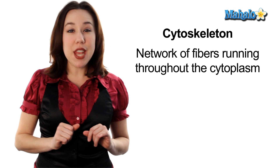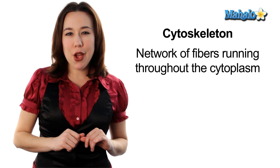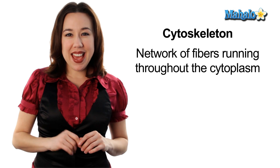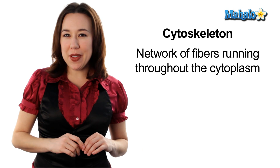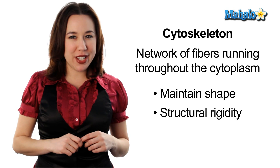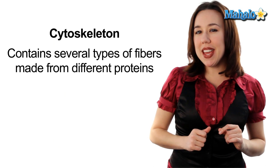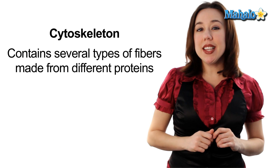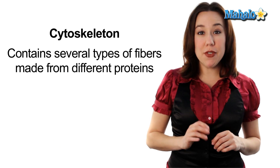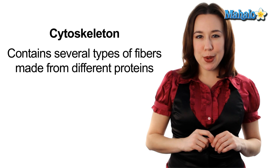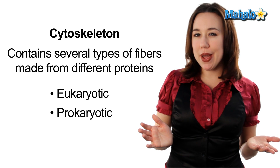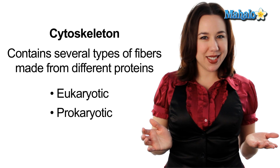The cytoskeleton is a network of fibers running throughout the cytoplasm and it helps the cell by maintaining its shape and giving it some structural rigidity. The cytoskeleton contains several types of fibers made from different types of proteins and is found in both eukaryotic and prokaryotic cells.